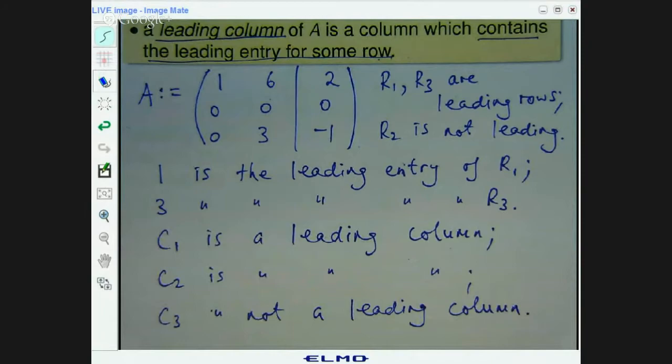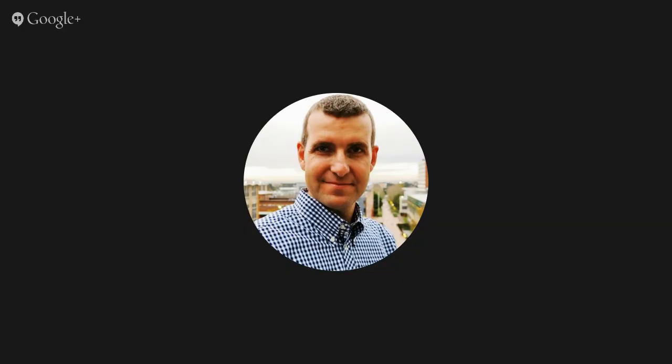Ok. So, let's do another example. That was a little bit laboured. But remember, it's important that you are able to identify leading rows, leading entries, leading columns, because the form that we are going to look at, the row echelon and reduced row echelon forms are going to rely on these topics. And we will talk about that in the next video. Ok, let's do another example.